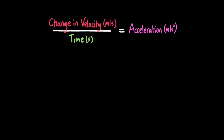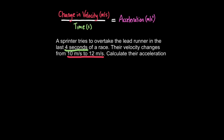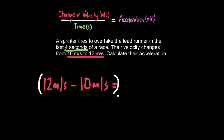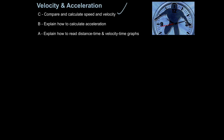You can calculate acceleration by dividing the change in velocity by the time that change took. For example: a sprinter tries to overtake the lead runner in the last 4 seconds of a race, and their velocity changes from 10 meters per second to 12 meters per second. Calculate their acceleration. First, find the change in velocity: 12 minus 10 equals 2 meters per second. Then divide by the time: 2 divided by 4 seconds gives an acceleration of 0.5 meters per second squared.